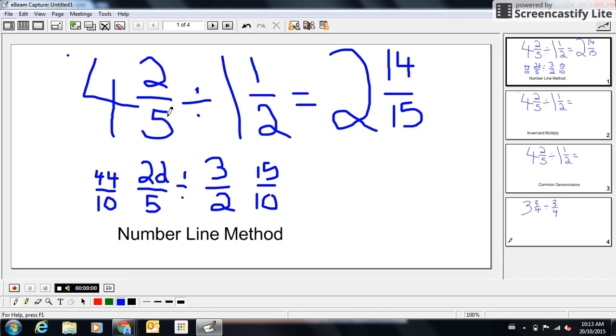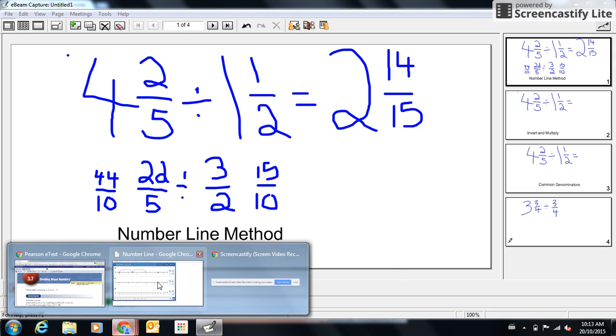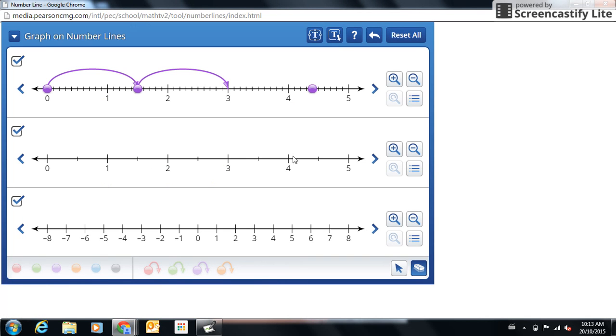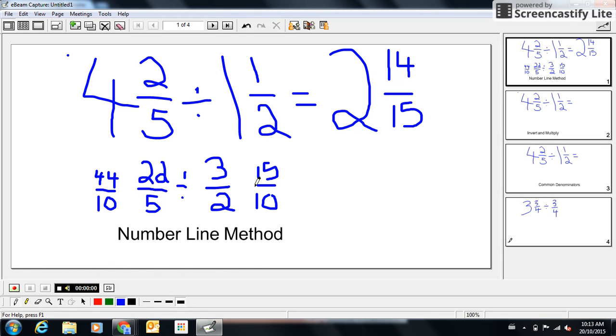So, four and two-fifths divided by one and a half is actually equal to two and fourteen fifteenths. I want to quickly show you something here. Remember where we drag this over? And I said it didn't work because it went past the dot. It only went one tick past the dot. So that's another way I could have figured out. I knew this jump was fifteen. I was short one. So fifteen subtract one is fourteen fifteenths. Either way, however you got there, your answer should have been two and fourteen fifteenths. Okay. So that's the number line method. Hopefully that made sense to you.